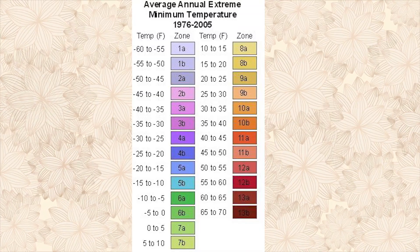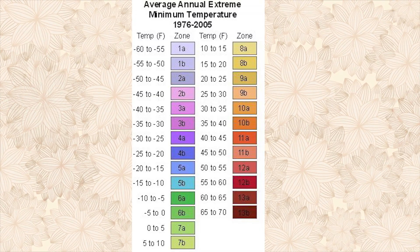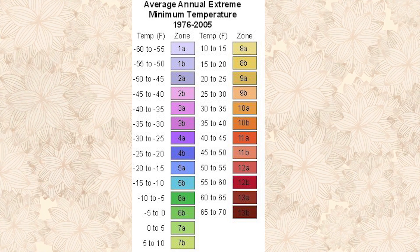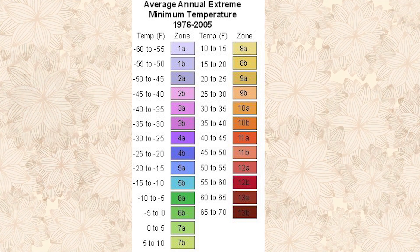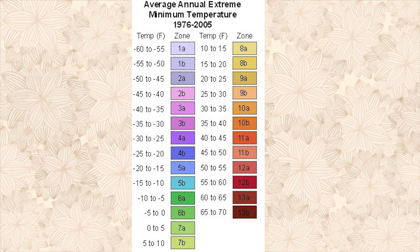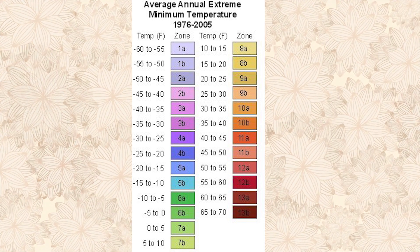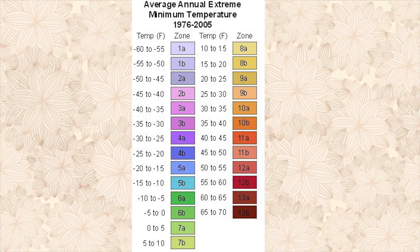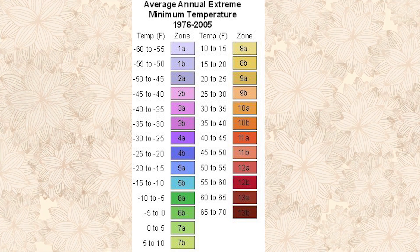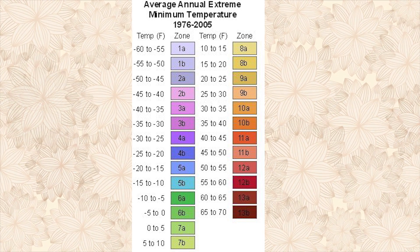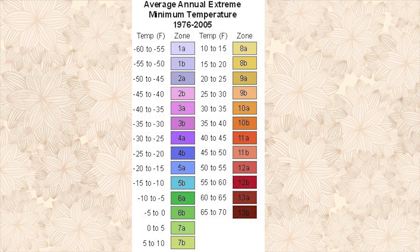This temperature plays a key role in whether a given plant species will survive and thrive in that area. This new version of the map is now divided into 13 different zones, each of which represents an area of winter hardiness for plants. Each zone represents an area where the average annual minimum temperature is within a 10 degree Fahrenheit range. Each of these zones is further divided into 5 degree Fahrenheit subzones A and B. For example, here in Austin, Texas, we're in zone 8B.